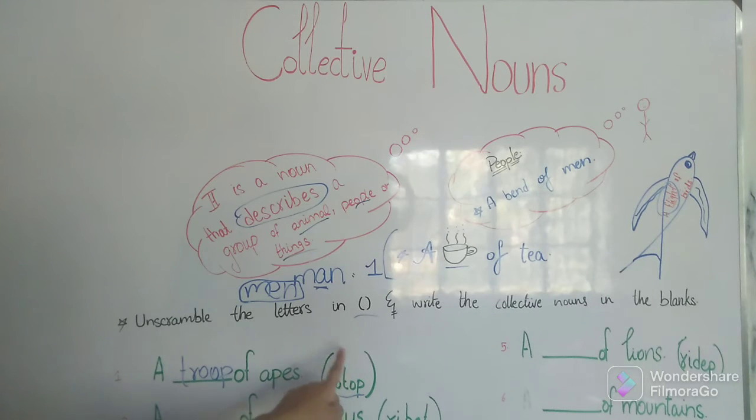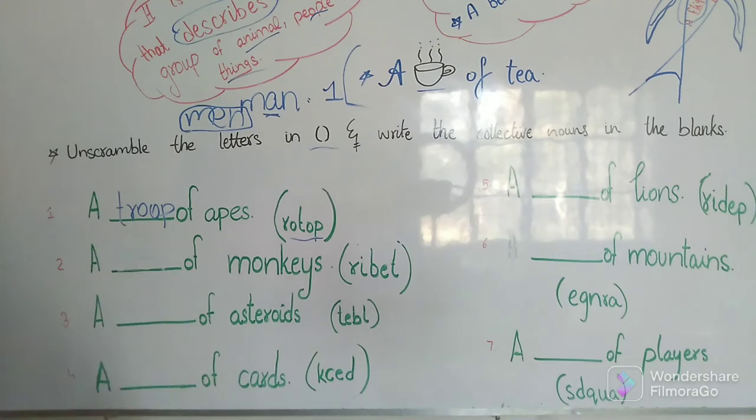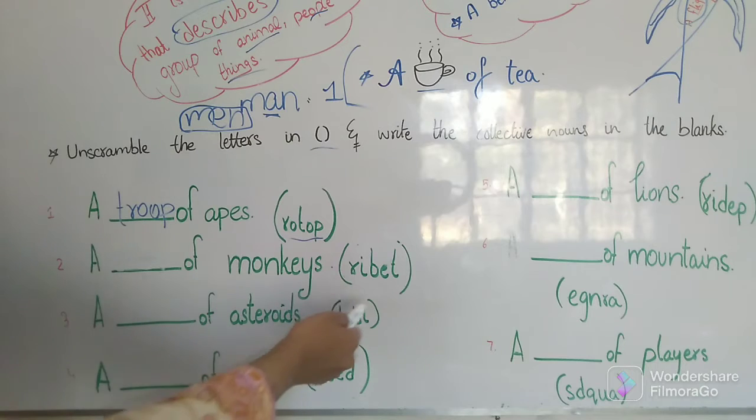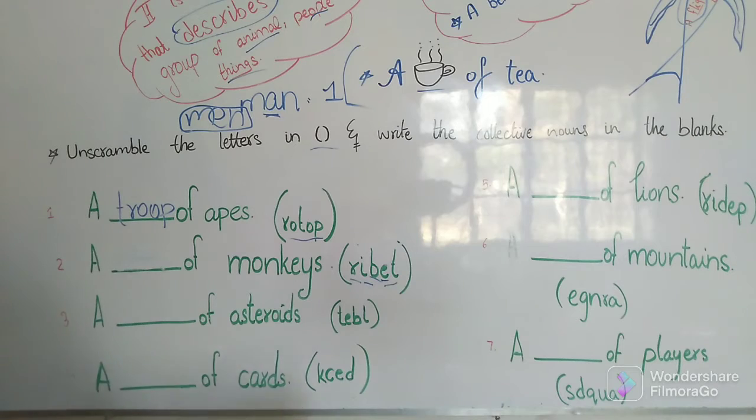Now our second sentence is a blank of monkeys. What of monkeys? A troop of monkeys? No. A belt of monkeys? No. A tribe of monkeys? Yes, it suits. T-R-I-B-E. A tribe, this word makes tribe. So we are going to write T-R-I-B-E, a tribe of monkeys.